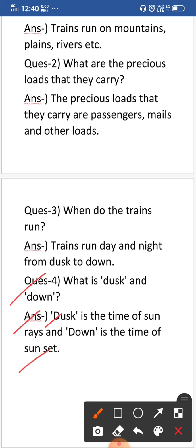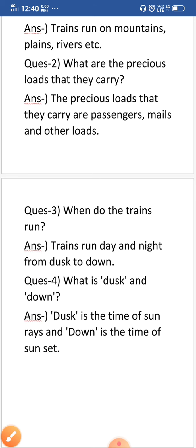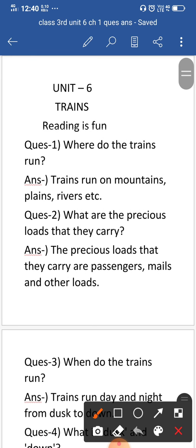So again I am going to read out your question answer. So the first question is where do the trains run? So your answer is trains run on mountains plains rivers etc. Question number two, what are the precious loads that they carry? So the answer is the precious loads that they carry are passengers, mails and other loads.